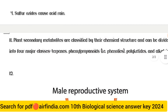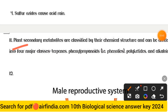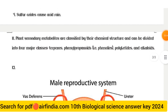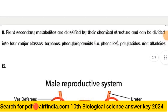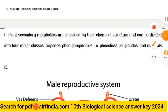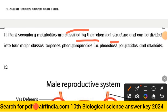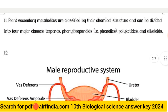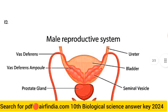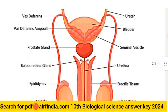The answer to question eleven — plant secondary metabolites: They are classified by their chemical structure and can be divided into four major classes: terpenoids, phenylpropanoids, phenolics/polyketides, and alkaloids. For question twelve, the labeled diagram of the male reproductive system should be drawn and labeled in your notebooks.